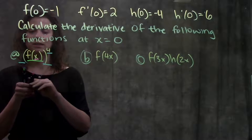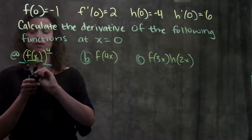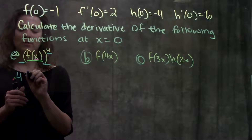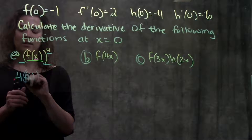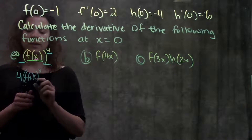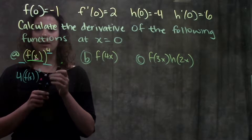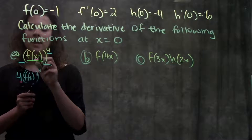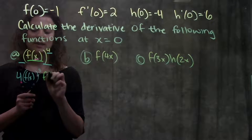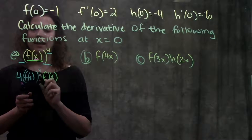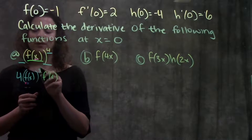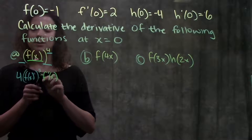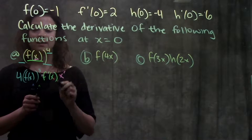My outside function is something raised to the fourth. To find that derivative, I just bring my exponent down, and it becomes 4 times f of x raised to the third — subtracting one from the exponent. Now I'm going to multiply that by this inside function's derivative. The derivative of f of x is just f prime of x. And then I multiply that by the derivative of the innermost function. The derivative of x I'll call x prime.